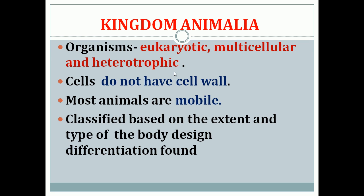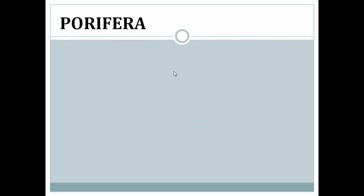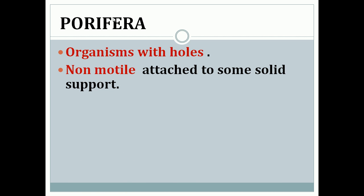We can classify Kingdom Animalia based on the type of body design. The first classification of Kingdom Animalia is Porifera. Organisms with holes come under Porifera — these are organisms with pored cells.